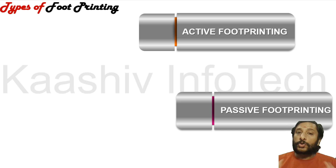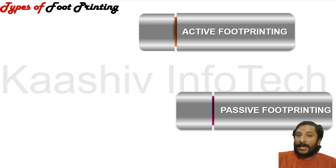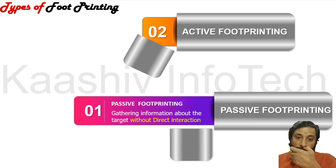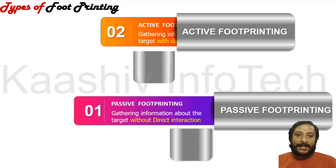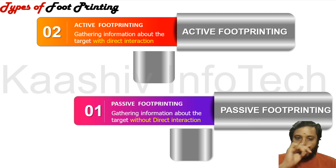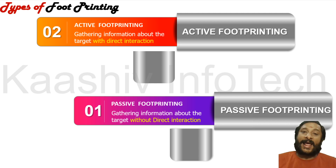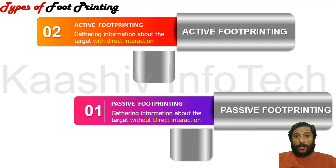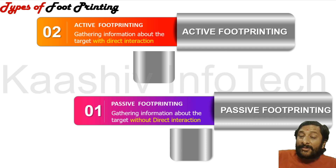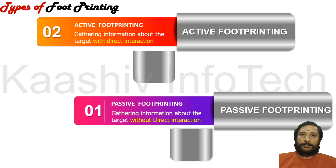There are two types of footprinting. The first is passive footprinting — gathering information without interaction. For example, collecting information about someone from a website without their knowledge, without interacting with them as the owner.